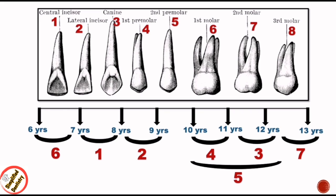So the maxillary eruption ages are: first molar 6–7 years, central incisor 7–8 years, lateral incisor 8–9 years, first premolar 10–11 years, canine 11–12 years, second premolar 10–12 years, second molar 12–13 years, and 7 between 12–13 years. Third molars do not erupt until age 17 or later, typically between 17 to 21 years.